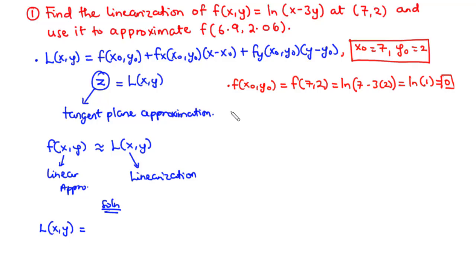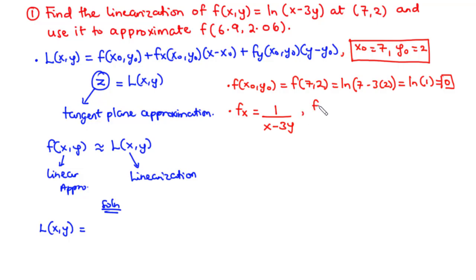Next, we find the partial derivative with respect to x. Differentiating the inside function, we get 1 divided by (x − 3y). Therefore, fx(7, 2) = 1 over (7 − 3·2) = 1 over 1 = 1.